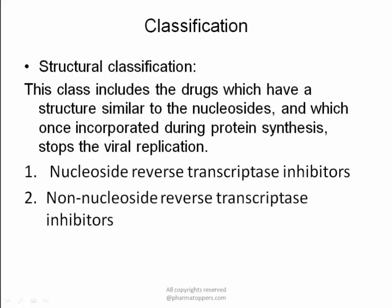Under structural classification, we have two classes: nucleoside reverse transcriptase inhibitors and non-nucleoside reverse transcriptase inhibitors. This classification is based on the chemical structure of these compounds. These agents mimic or have a similar structure to certain nucleosides or nucleotides, and therefore get incorporated into the growing DNA chain of the virus during its integration into the host DNA, stopping replication and protein synthesis of the viral cells.